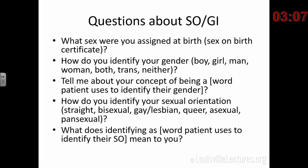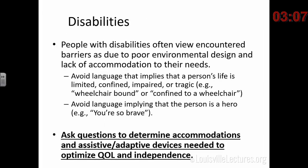Some questions to ask: 'What sex were you assigned at birth? How do you identify your gender? Tell me about your concept of being transgender' — or whatever term the person uses. 'How do you identify your sexual orientation? What does identifying as gay mean to you?' Give people an opportunity to explain a bit more. Regarding disabilities: people with disabilities view the world as having barriers in it. Ask questions to determine what kinds of accommodations the person needs for good quality of life and independence.